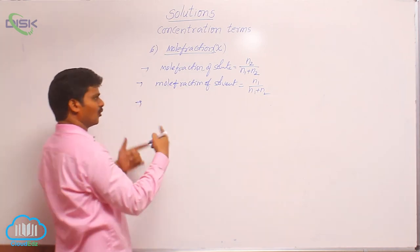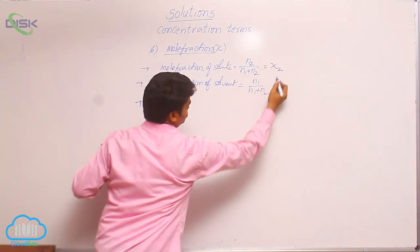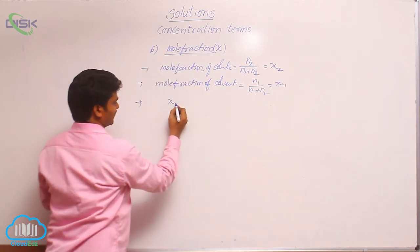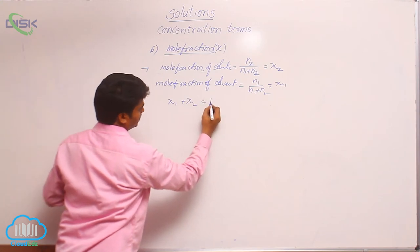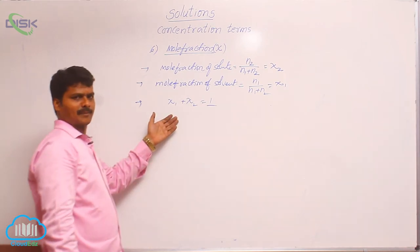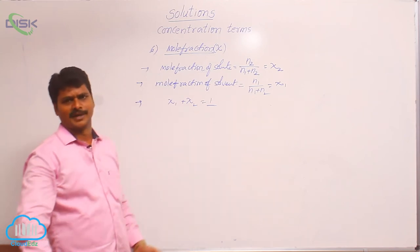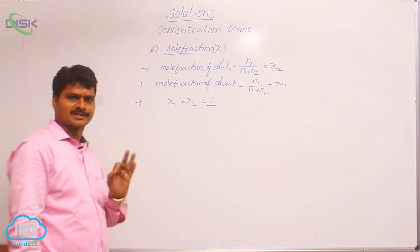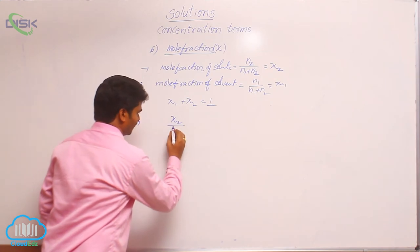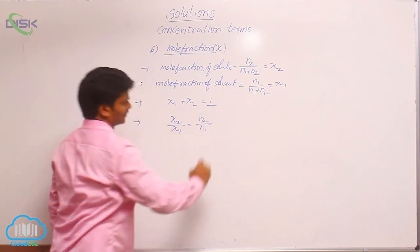The sum of mole fractions in a solution equals 1. So chi1 + chi2 = 1 for a binary solution. If there are many components, chi1 + chi2 + chi3 + … = 1. Whatever the number of components, the sum of mole fractions must equal 1. Also, mole fraction of solute divided by mole fraction of solvent equals number of moles of solute divided by number of moles of solvent.